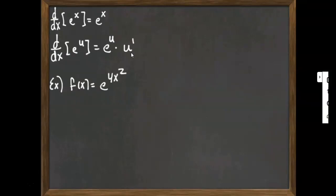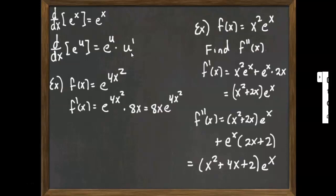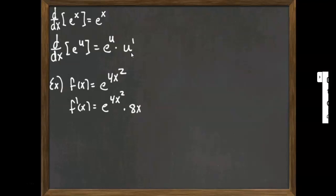Here we have f of x equals e to the 4x squared. So I'm going to step this through without substitution and just jump to my result here. And so that would be e to the 4x squared times the derivative of its exponent, which is 8x.